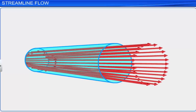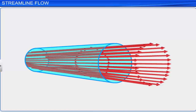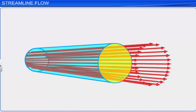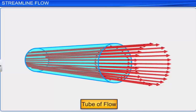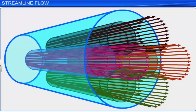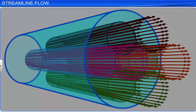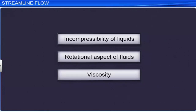All the streamlines drawn from the periphery of an area constitute a tube of flow for which that area is the cross-section. Fluids flowing through different tubes of flow do not intermix even without a physical partition. Fluid dynamics can be better understood by considering three factors: incompressibility of liquids, the rotational aspect of fluids, and viscosity. Liquids are largely incompressible compared to gases. When fluid flow is along a straight line it is irrotational; when the fluid swirls it is rotational. Viscosity is related to internal friction when a layer of fluid slips over another.